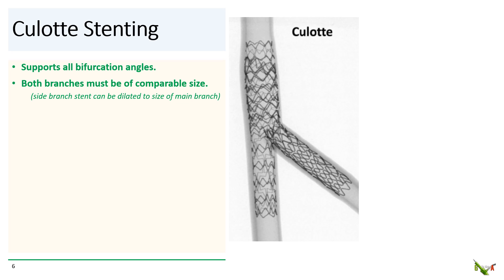However, culotte would be feasible if the main branch were only 3.5 mm, since you could dilate a 2.25 mm stent up to 3.5 mm.